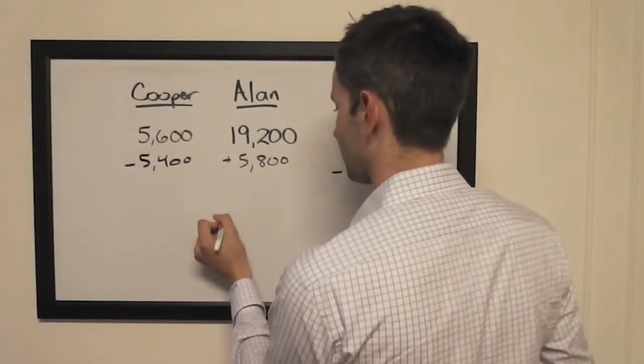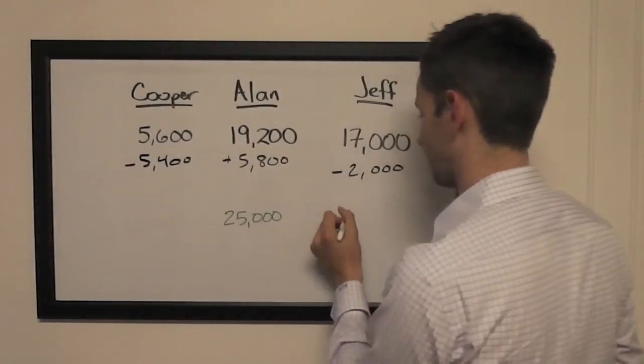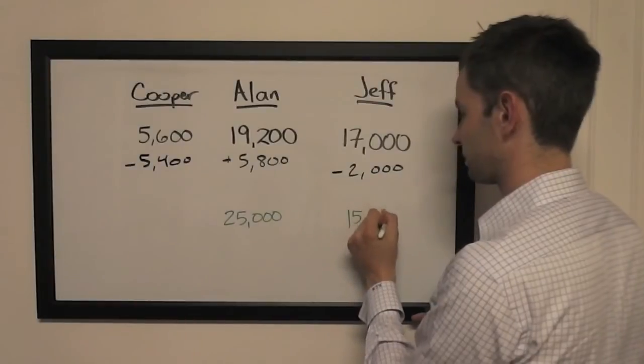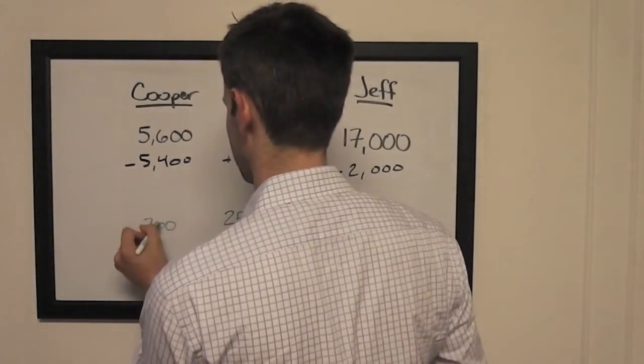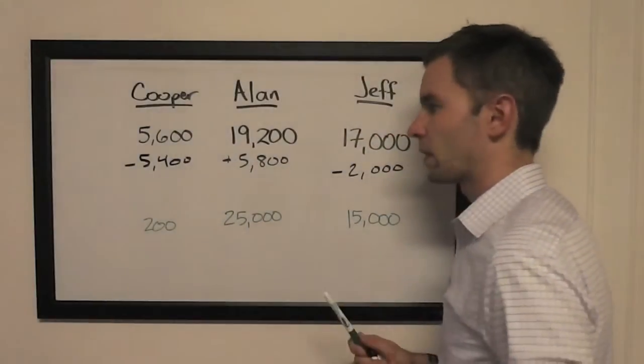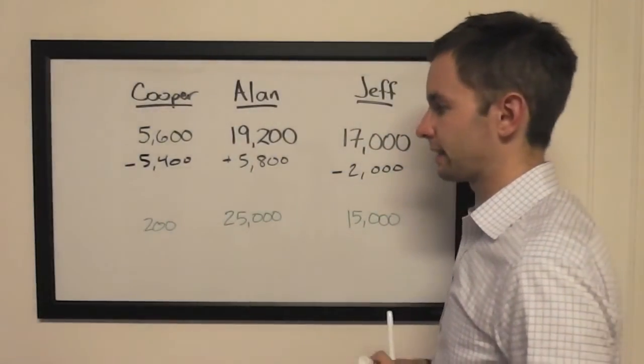So Alan is in the lead with $25,000. Jeff is in second with $15,000. And Cooper is in third with $200, but who knows? Anything can happen.